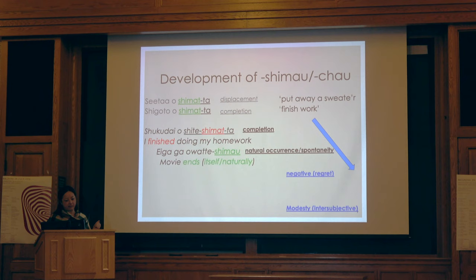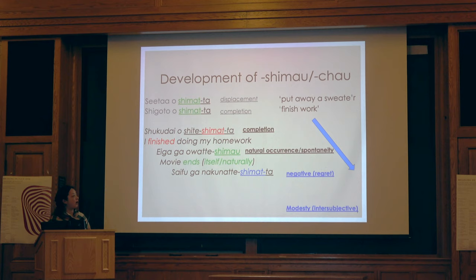Then 'eiga ga owatte shimau' — another referential meaning, spotting the natural occurrence. And 'saifu ga nakunatte shimatta' — 'my wallet disappeared' — over time this became more subjective.